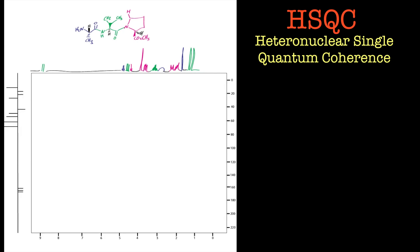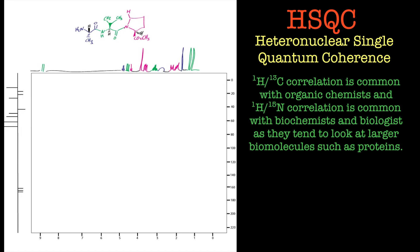Hi and welcome back to this second part of the HSQC NMR spectroscopy tutorial. In this particular tutorial we're going to have a look at the tripeptide that was used in the NOESY NMR spectroscopy tutorial. I find this is a more realistic example if you work in a laboratory.